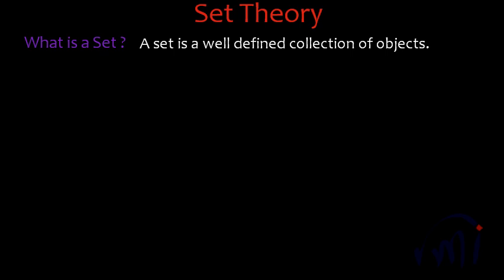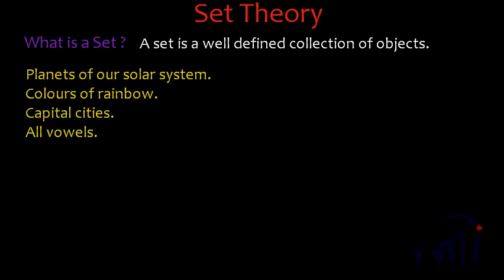So what is a set? A set is a well-defined collection of objects. The well-defined collection of objects can be: planets of our solar system — there are only eight planets, and any planet other than those eight is not part of the solar system. Similarly, the colors of the rainbow — we all know there are seven colors, and any color other than those is not included. Similarly, capital cities — also a well-defined set — and the set of all vowels. This is also a well-defined set.